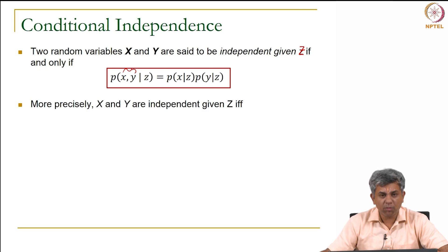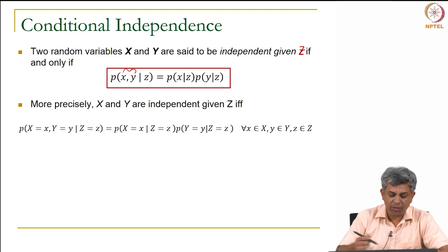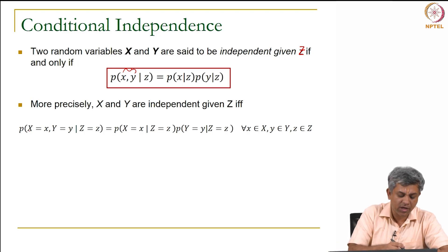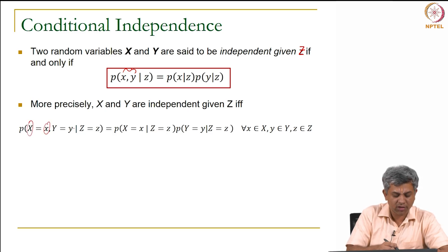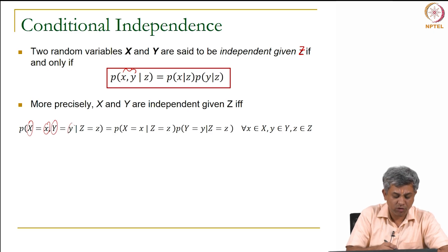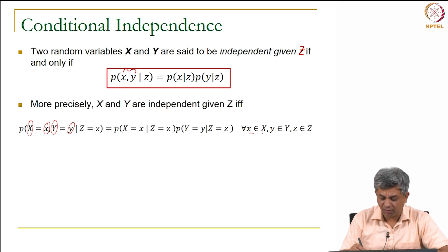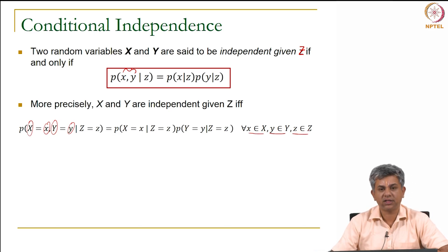To give a more precise definition, just as before: P(X=x, Y=y | Z=z) = P(X=x|Z=z) × P(Y=y|Z=z) must hold for all values of x, y, and z.